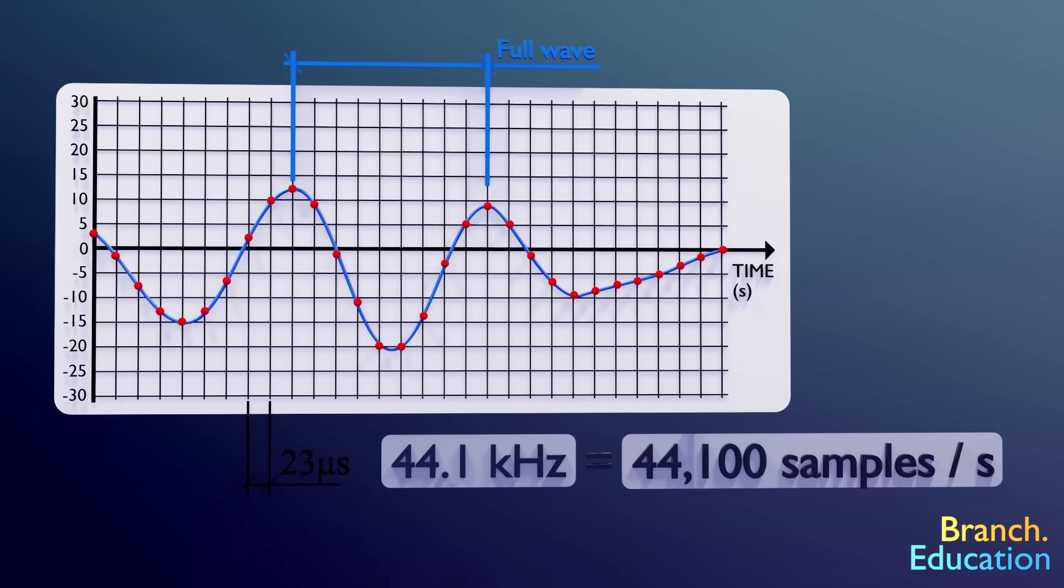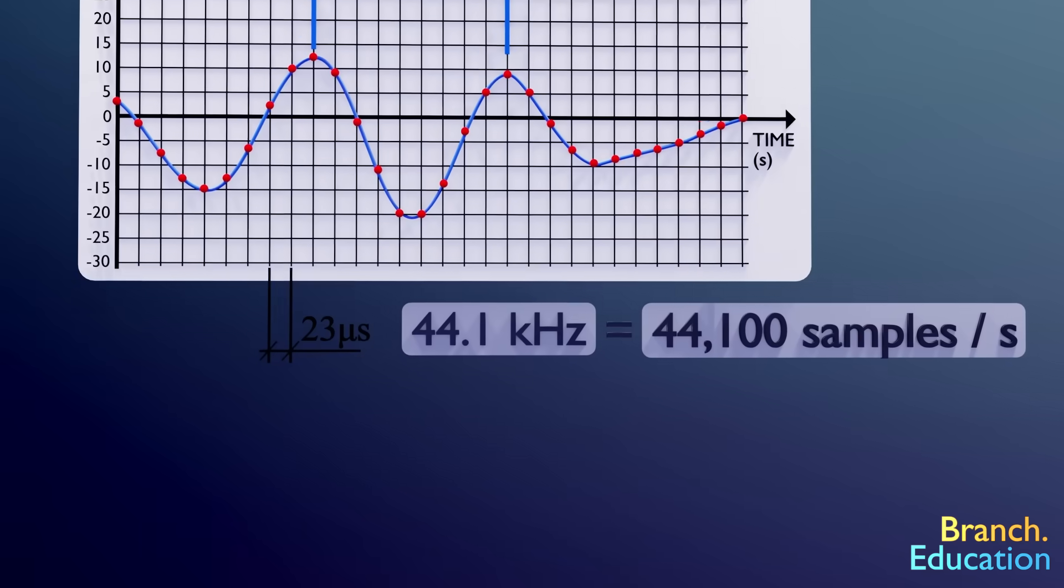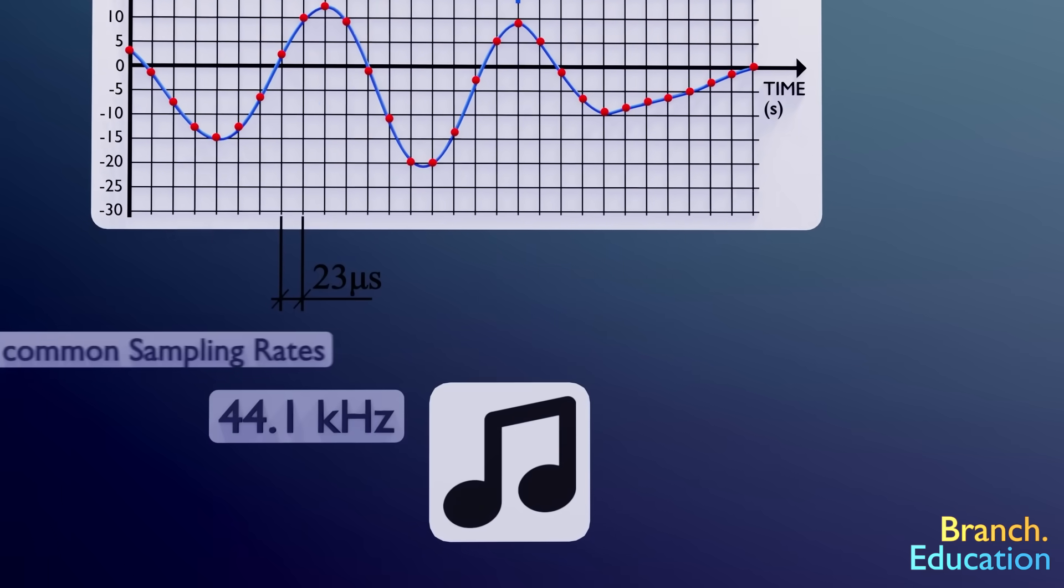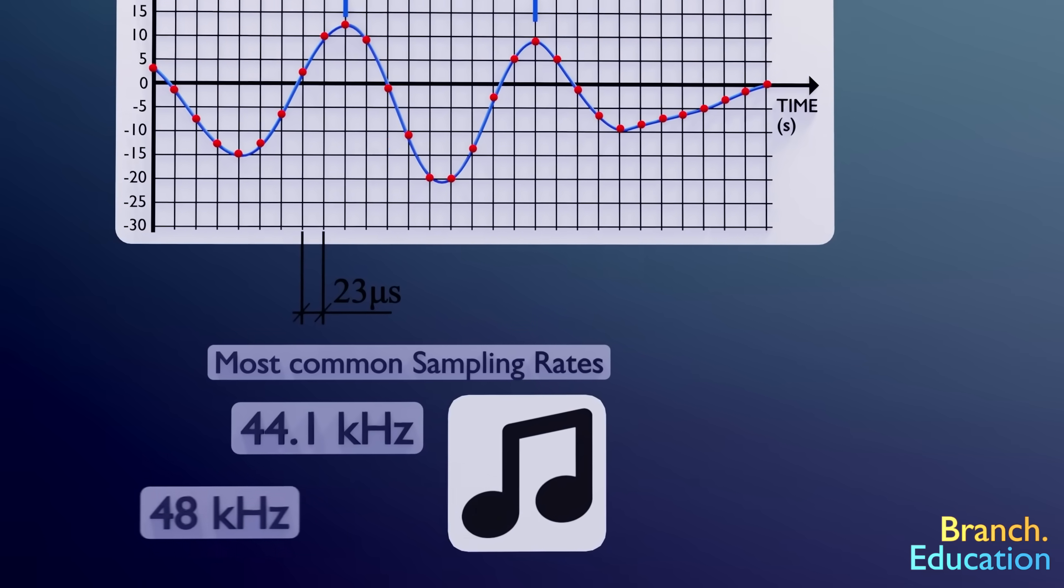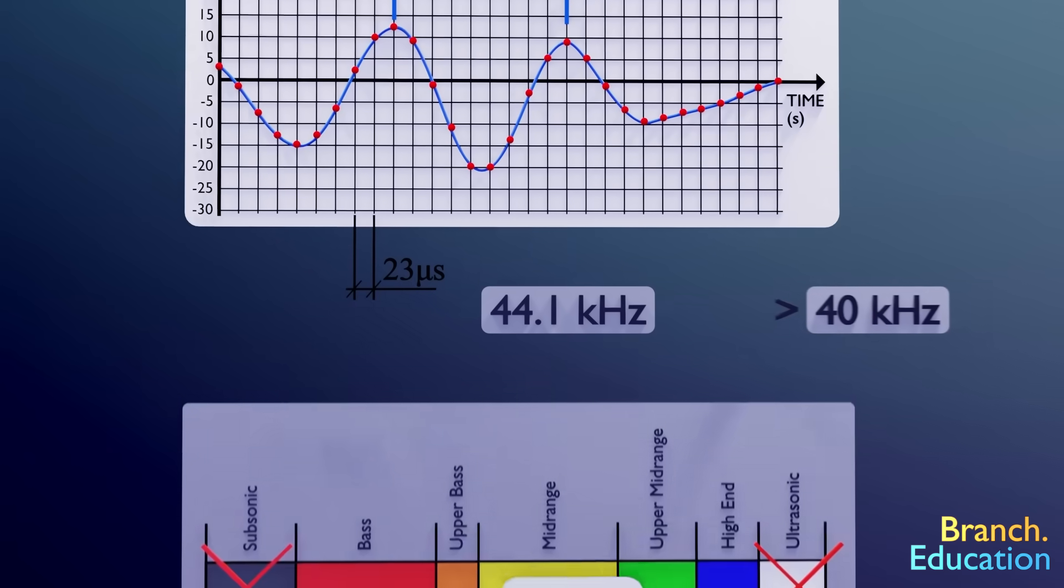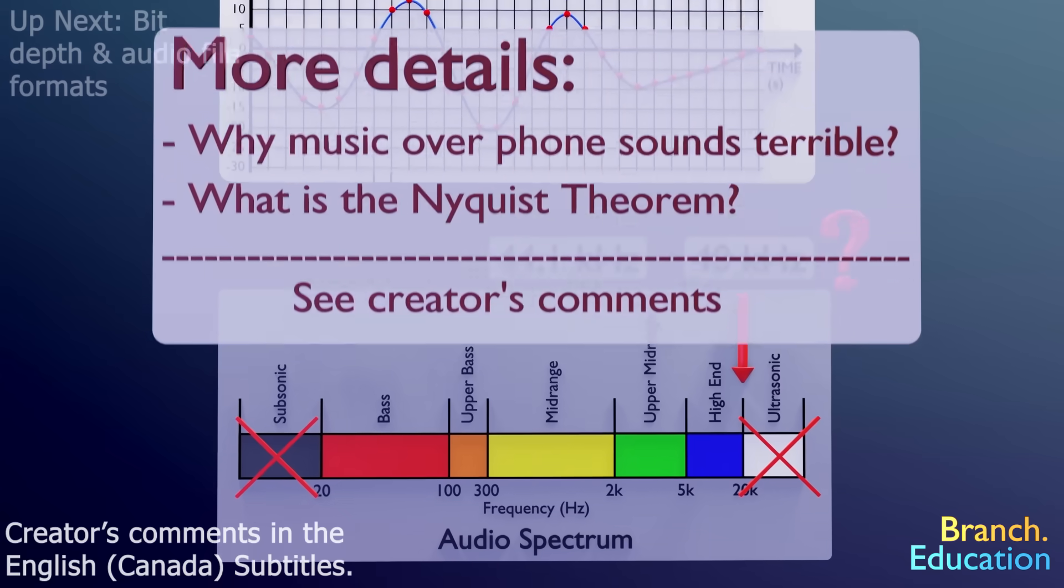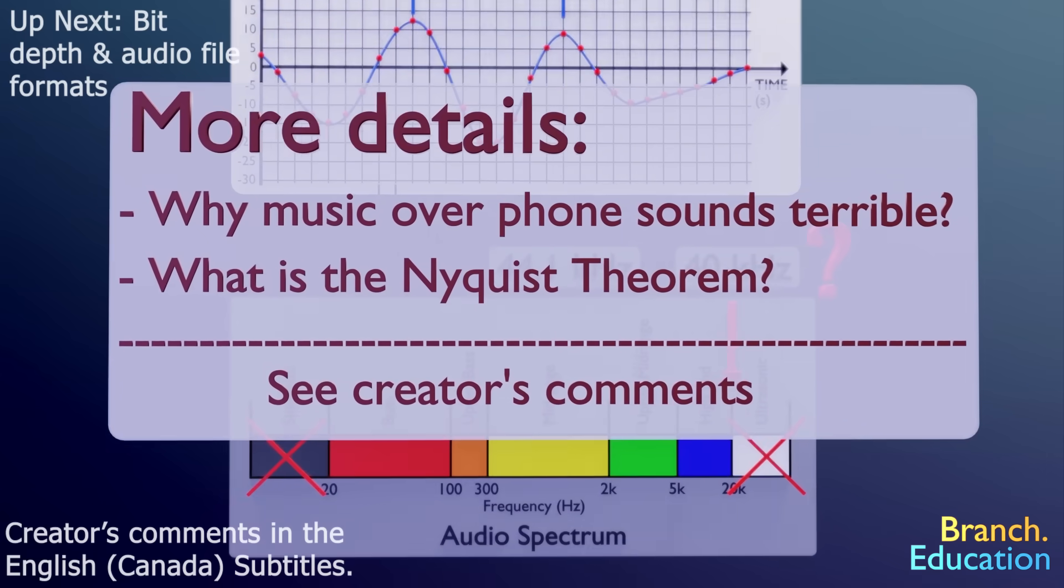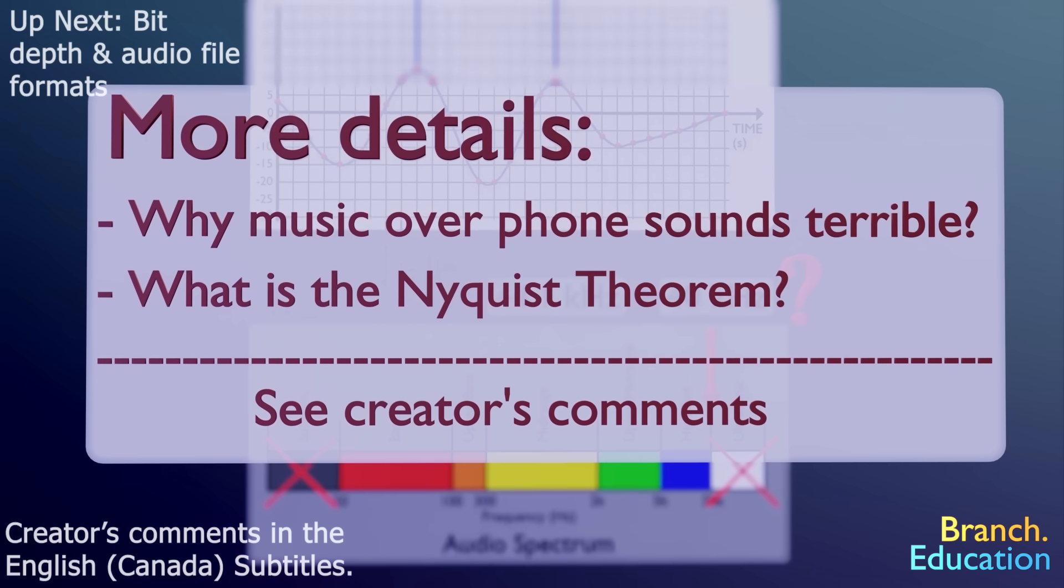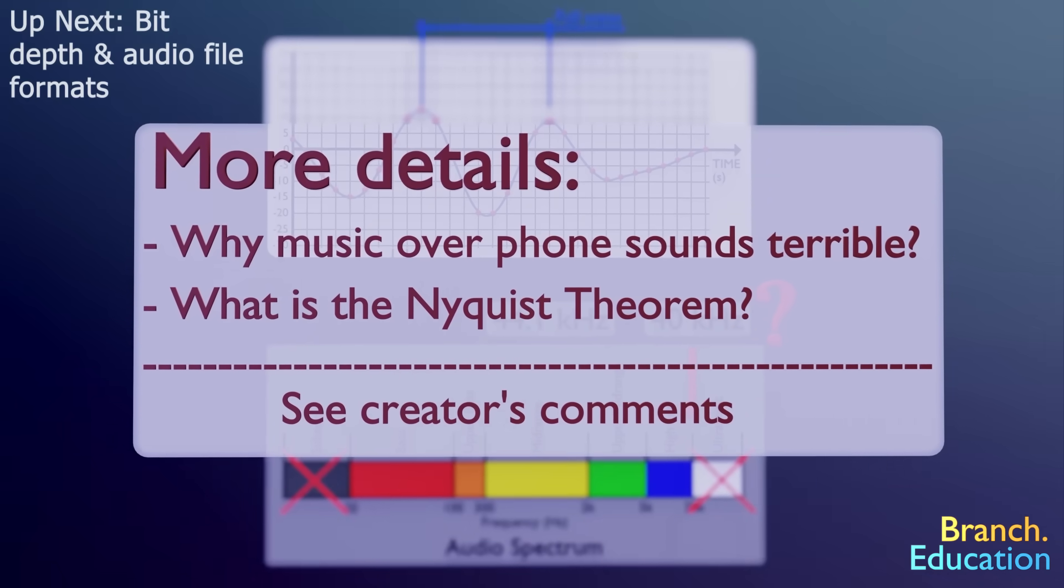Note that this sampling rate or sampling frequency of 44.1 kilohertz is the most common rate for recorded audio such as music and podcasts. And 48 kilohertz is the second most common sampling rate. But why is the number slightly more than double the frequency of human hearing? Well, you can find those specifics along with details as to why music played over the telephone always sounds terrible and finer points on the Nyquist theorem and aliasing in the creator's comments.